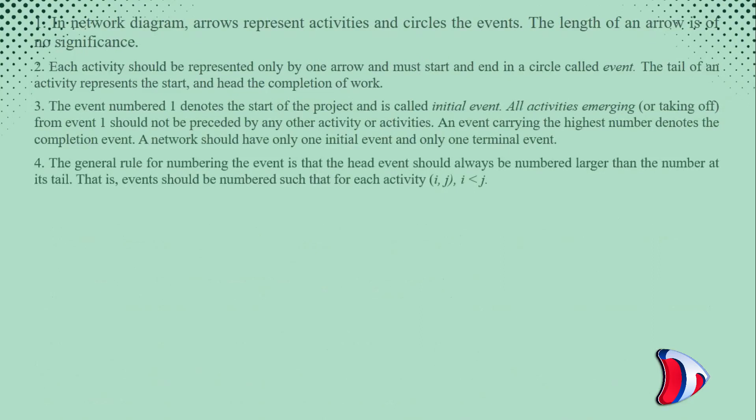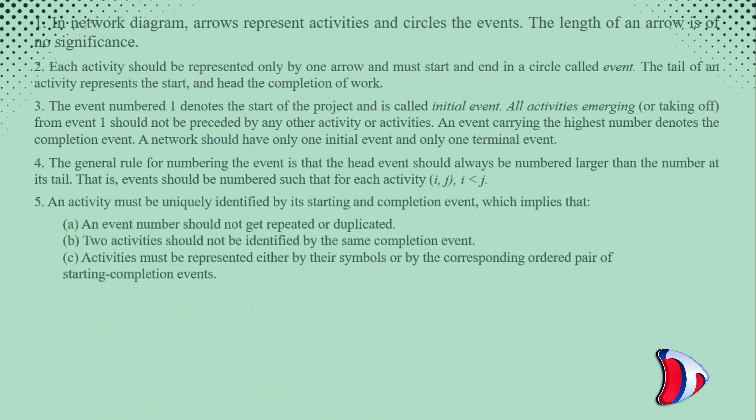The general rule for numbering the event is that the head event should always be numbered larger than the number at its tail. That is, events should be numbered such that for each activity i,j, i is less than j.